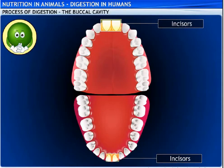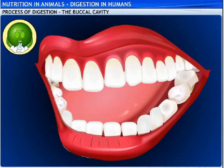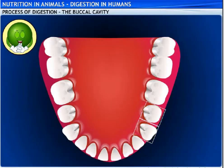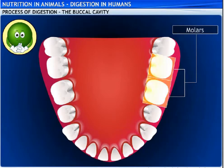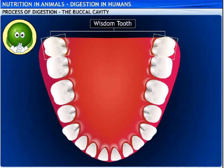These are the incisors — they act like scissors and are used for biting food. These are the canines, sharp and pointed, used to pierce or tear food. These are your premolars, and these big ones are your molars or the principal grinders — these teeth help in chewing and grinding food. The last molar of each side in each jaw is called the wisdom tooth.